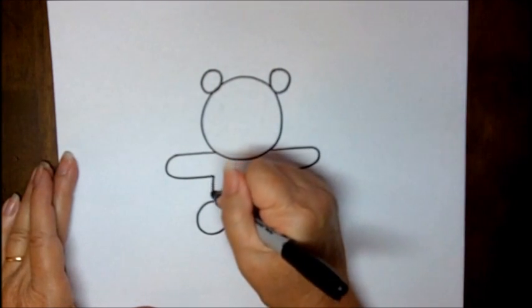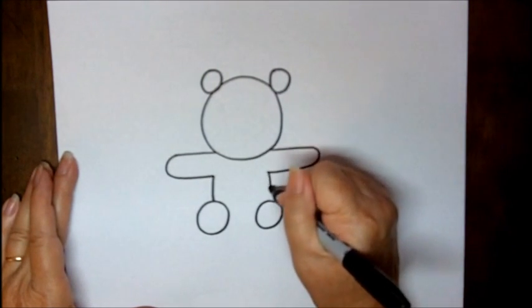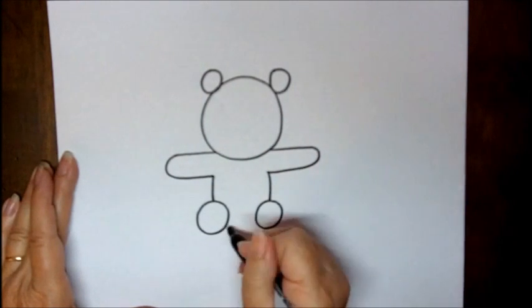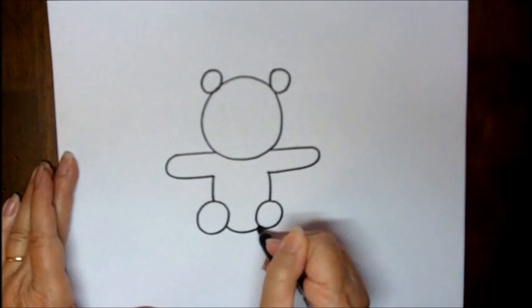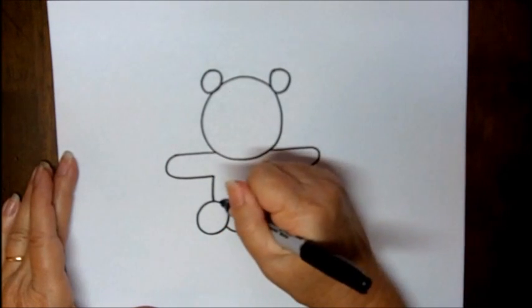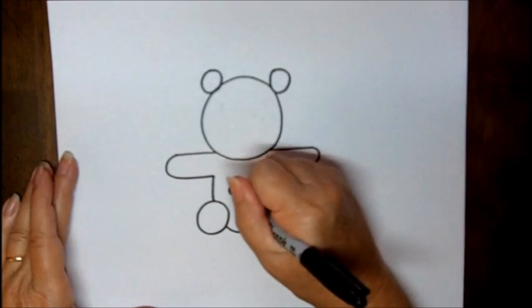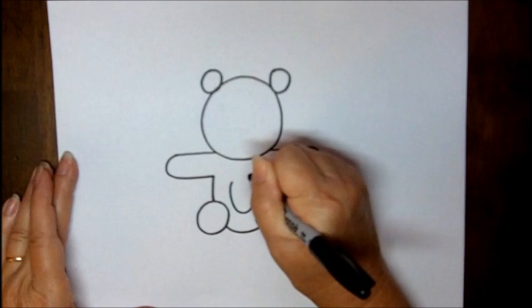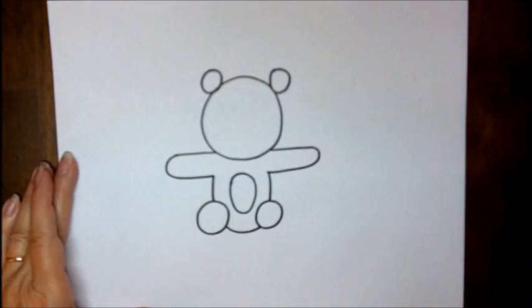Now we're going to bring kind of a curved line down because he has a little bit of a tummy, and then we're going to close it up like this with a curved line. We're going to add a little bit of a round area for his tummy, so his tummy stands out a little bit.